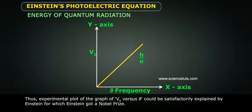ν₀. Thus, experimental plot of the graph of V₀ versus ν could be satisfactorily explained by Einstein, for which Einstein got a Nobel Prize.